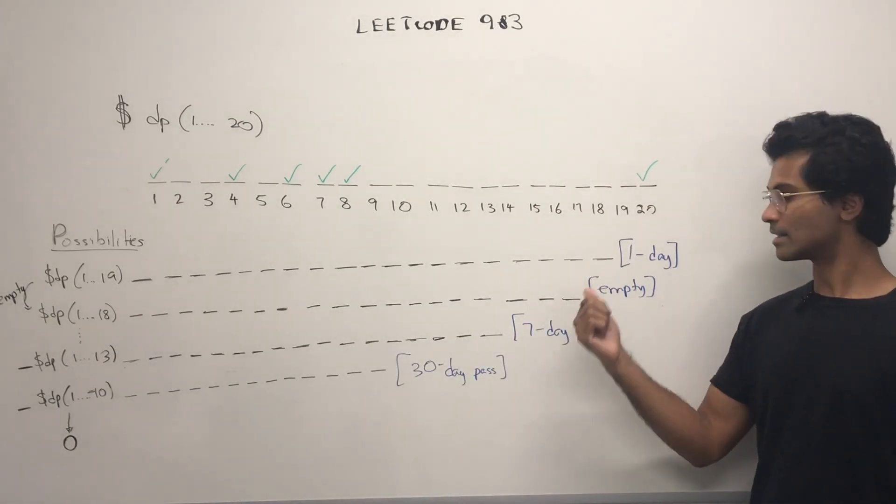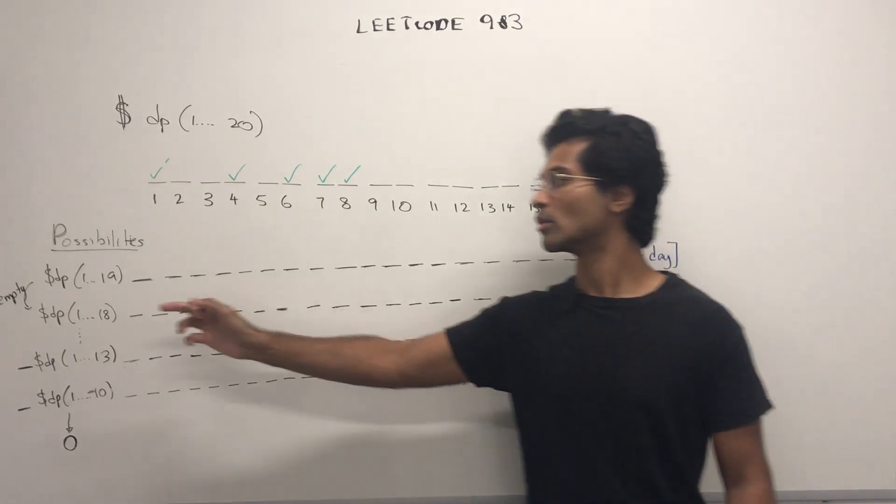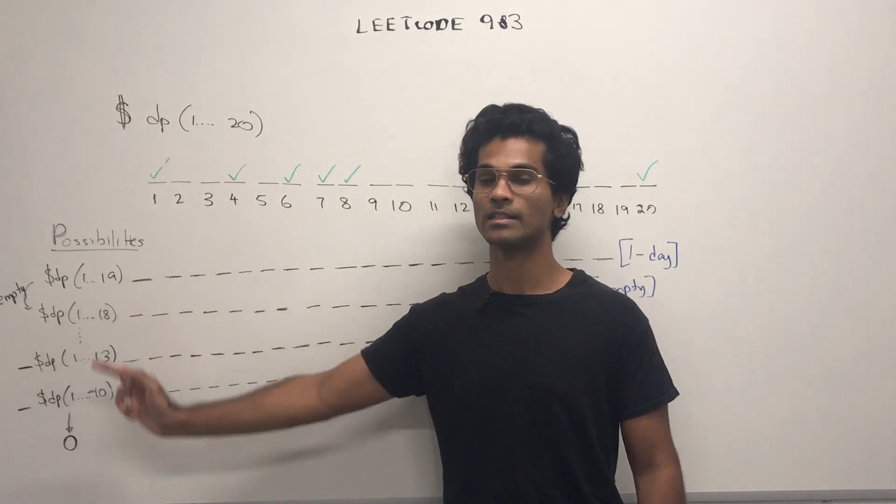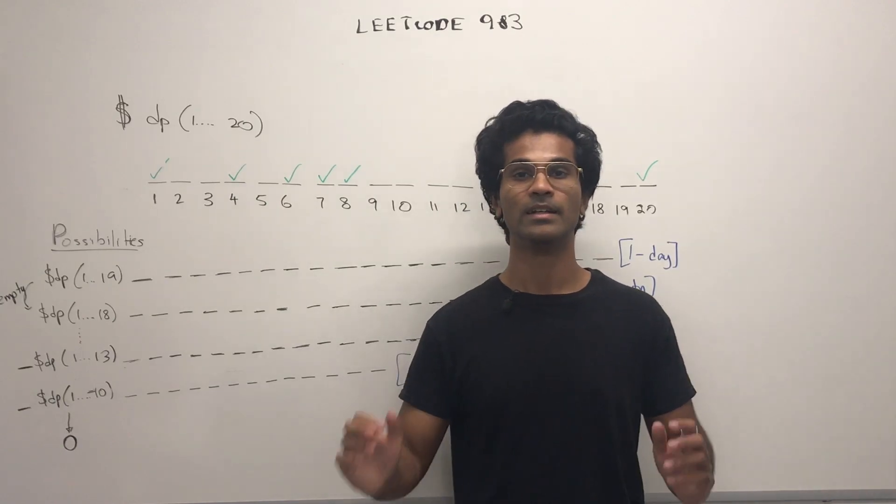And these are going to be the important sub-problems we use. The 1-day pass, 7-day pass, and the 30-day pass. The empty case, which we just noticed between 1 to 19 and 1 to 18, is going to be useful for the days that don't have a checkmark.